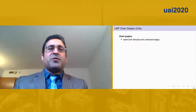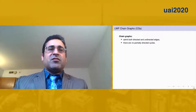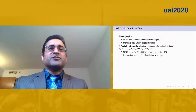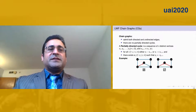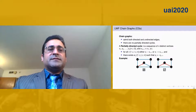Chain graphs are a type of mixed graphs that may have both directed and undirected edges. However, in a chain graph, there is no partially directed cycle. For example, in the figure at the left, there is a partially directed cycle, which is U-Z-V-U, so this graph is not a chain graph. On the other hand, the graph at the right is a chain graph.